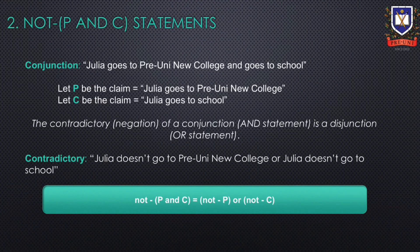A not-(P and C) statement is the contradictory of a conjunction. For example, consider the conjunction: Julia goes to Pre-Uni New College and goes to school. Let P be the claim that Julia goes to Pre-Uni New College and let C be the claim that Julia goes to school. The contradictory of a conjunction is a disjunction. So the contradictory of this conjunction is: Julia doesn't go to Pre-Uni New College or Julia doesn't go to school.